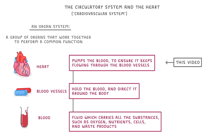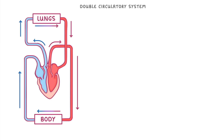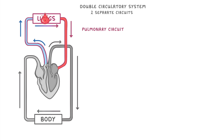So why do we call it a double circulatory system? Basically it's because it contains two separate circuits. There's the pulmonary circuit, where blood flows from the heart around to the lungs and then back to the heart again.